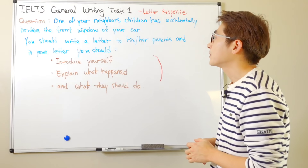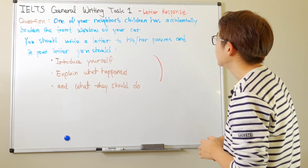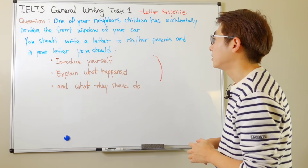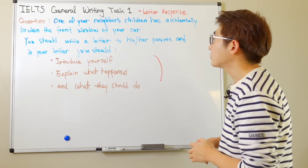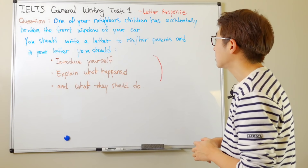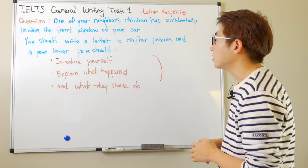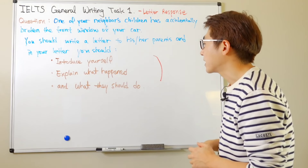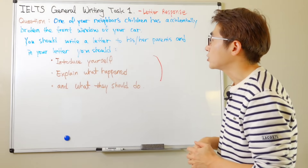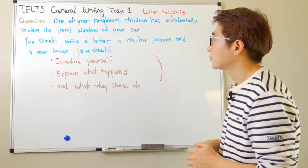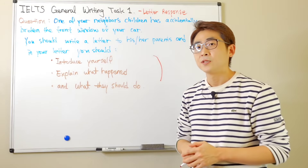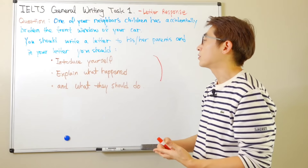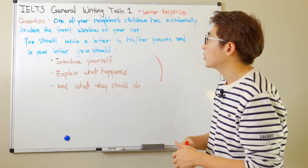Let's read over the question together. One of your neighbor's children has accidentally broken the front window of your car, and you should write a letter to his or her parents. In your letter you should introduce yourself, explain what happened, and what they should do. Fairly simple.